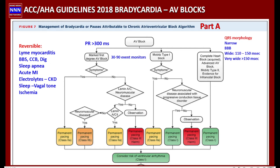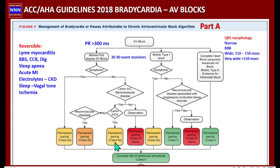Putting a pacemaker in asymptomatic first degree AV block patients without neuromuscular disease is harmful — anything highlighted in red on the chart is important for board questions. If the block is related to neuromuscular conditions, these patients may get a permanent pacemaker. If a person has a significant first degree AV block with PR interval greater than 240 or 300 milliseconds and they are having symptoms, they may be a candidate for a permanent pacemaker as a class 2A indication. Patients with chronic permanent neuromuscular diseases may be a class 2B indication for a pacemaker.